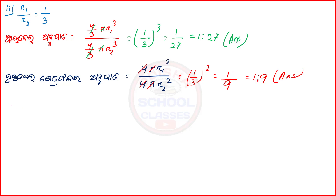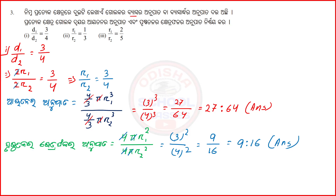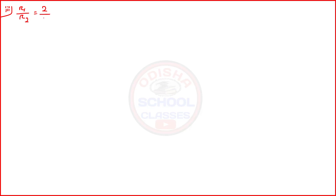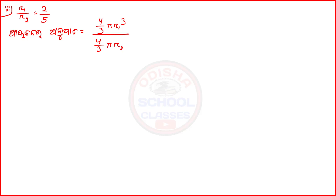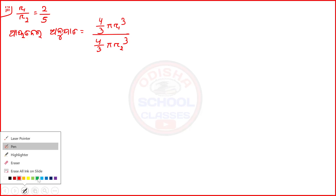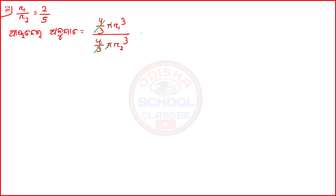Now let's see: we have 4πr1 square by 4πr2 square with r1 by r2 = 2 by 5. 2 by 5 squared, so the answer is 4 by 25. R1 by R2 means 2 by 5, giving 2 by 9. The answer is 4 by 25.